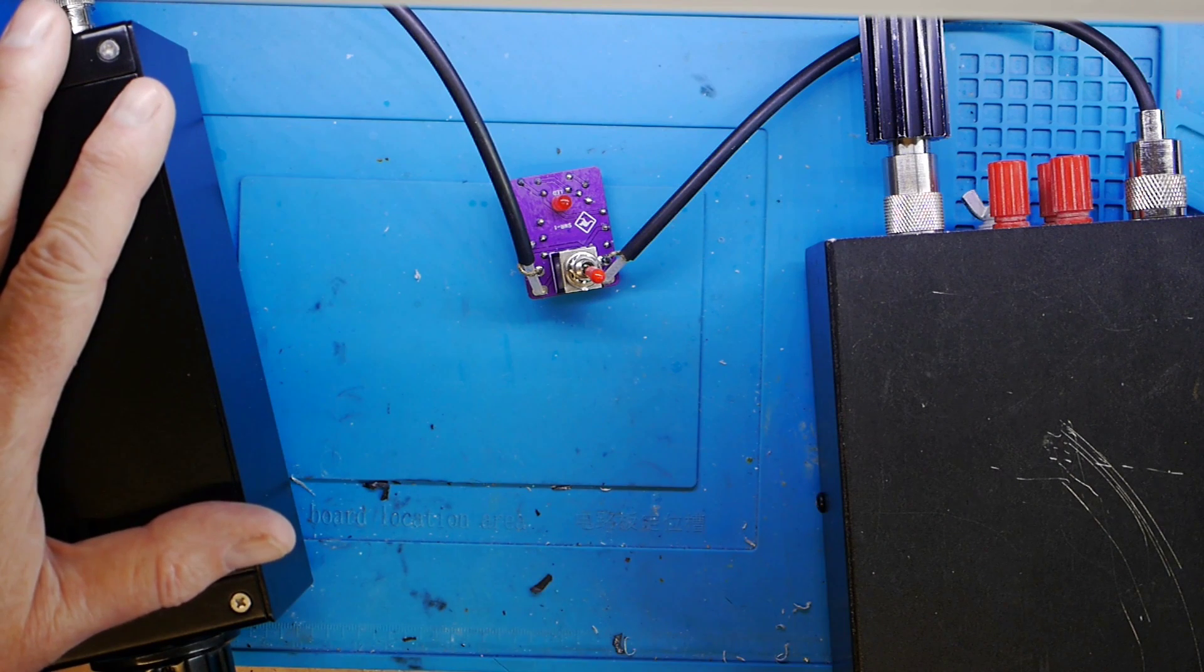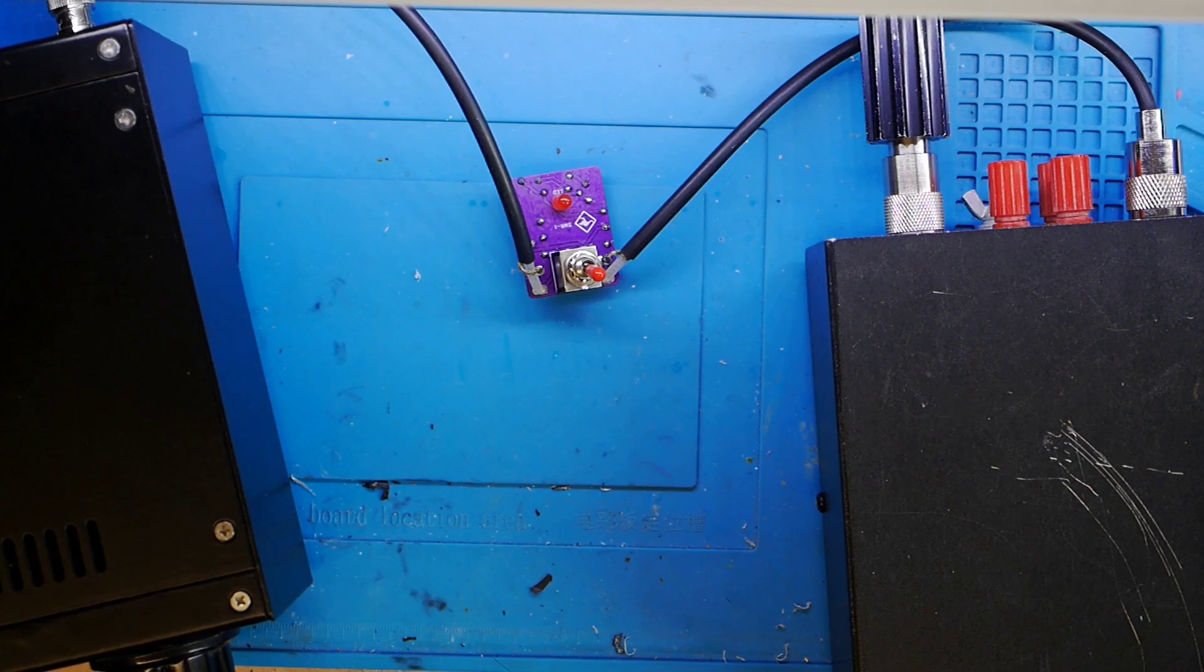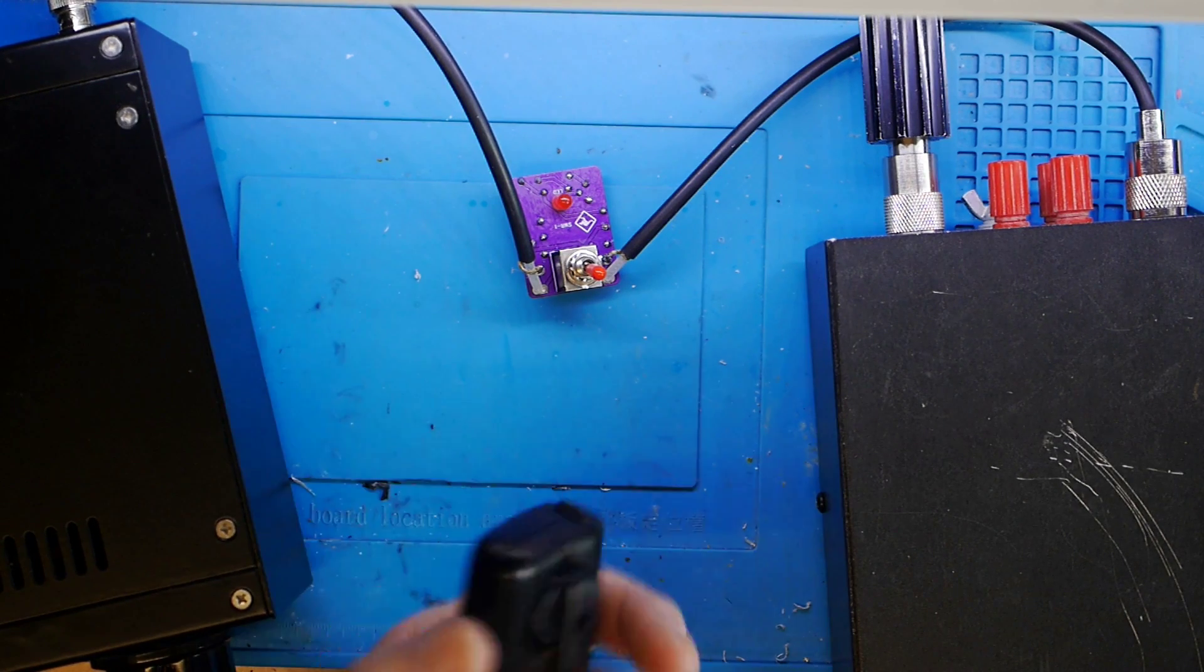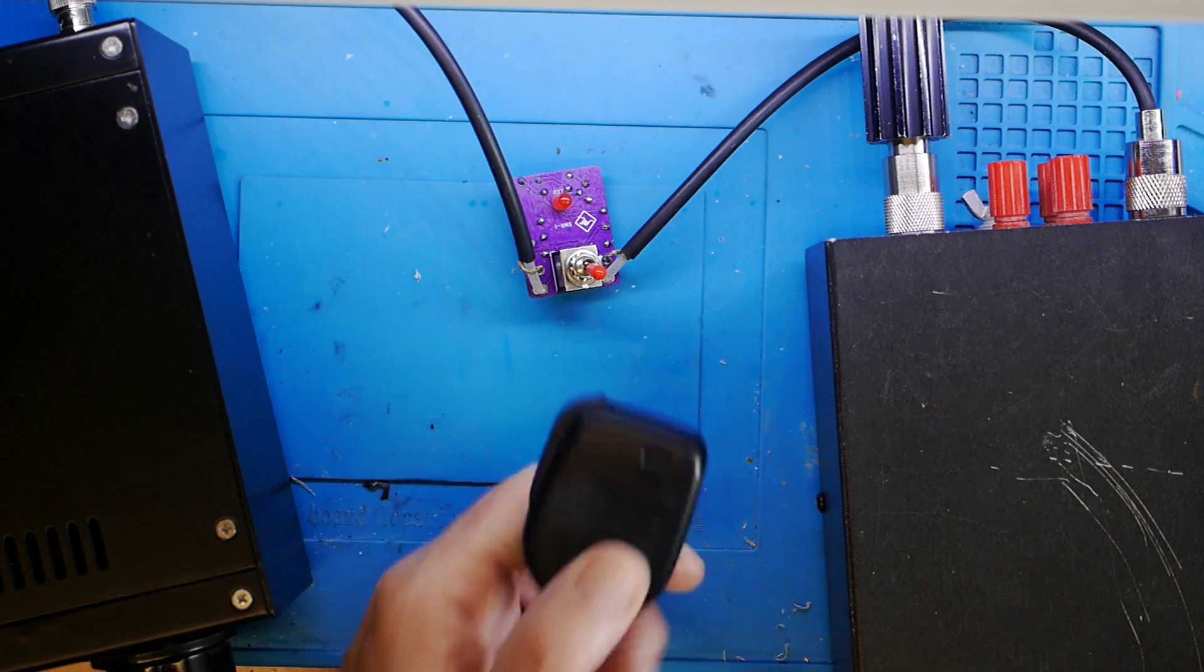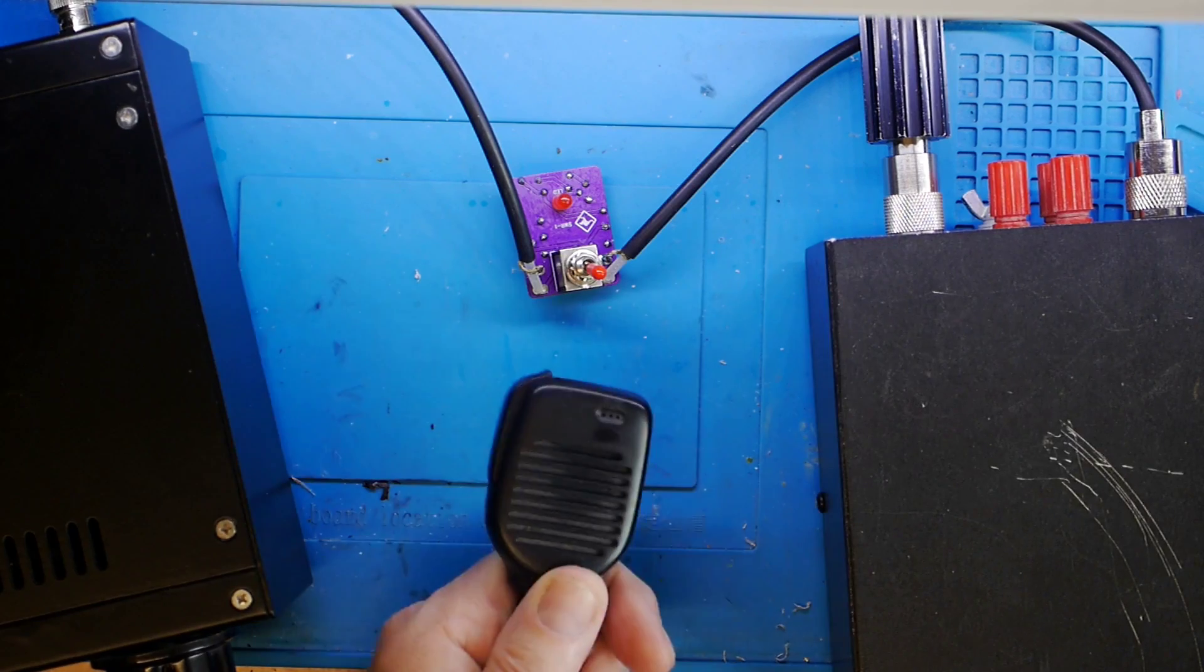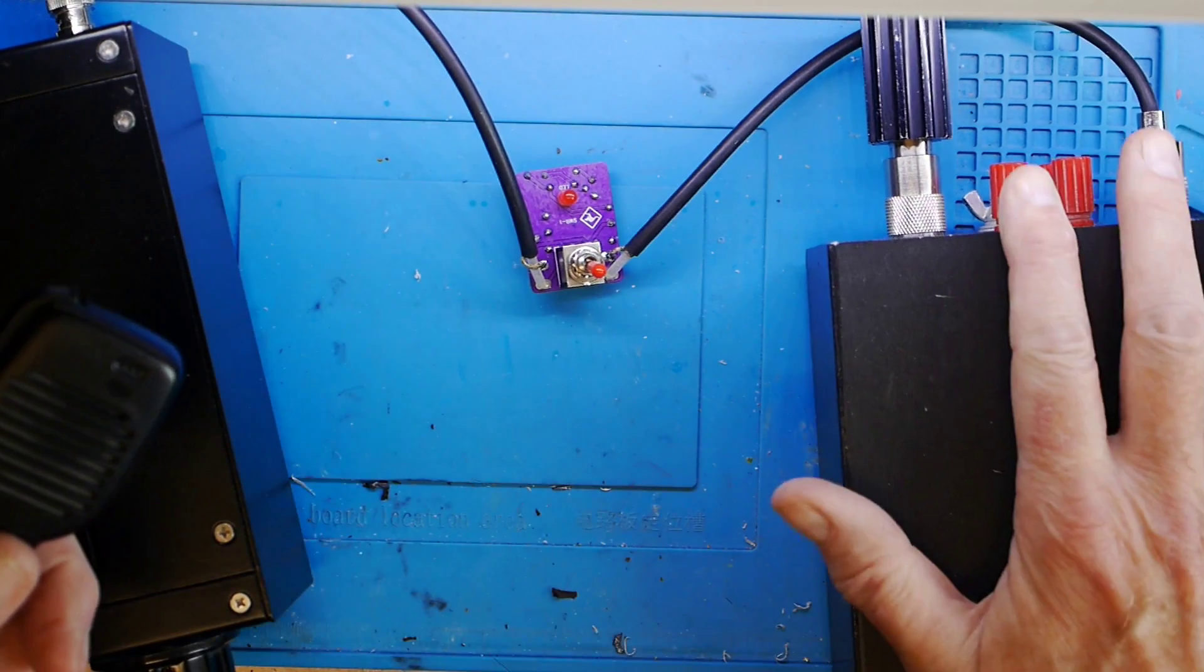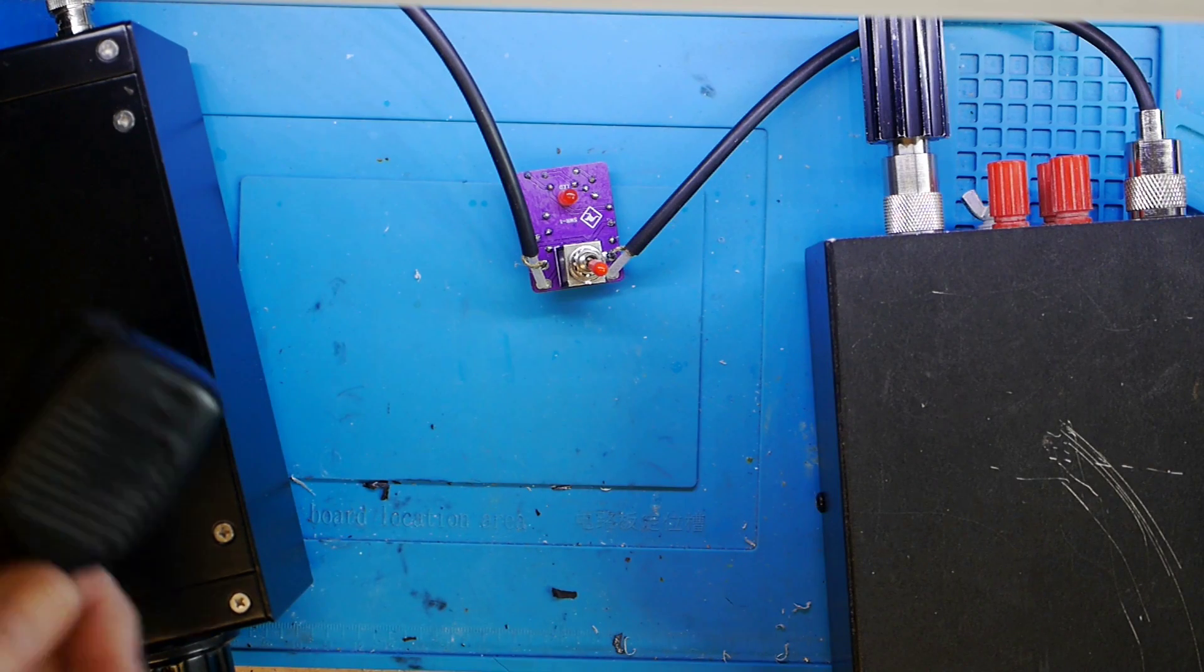So there you go, a couple of additions to the MicroBitX: a new microphone—well, an old microphone but a different one—which, as you can see from the spectro analyzer plots earlier, has solved the audio problem, and a QRP SWR bridge which has solved my little tuning the antenna problem. So there we go.